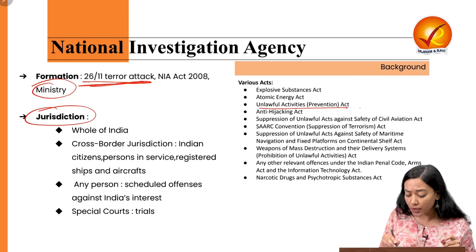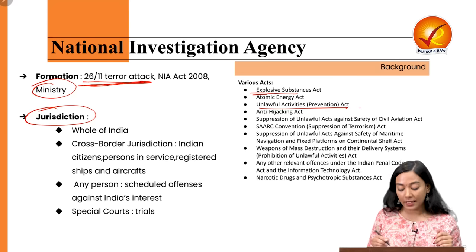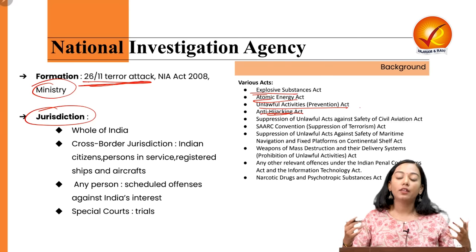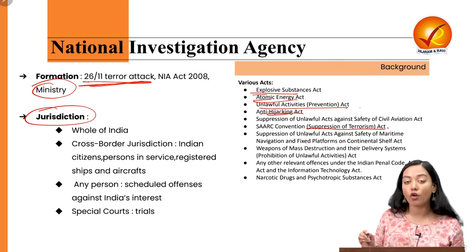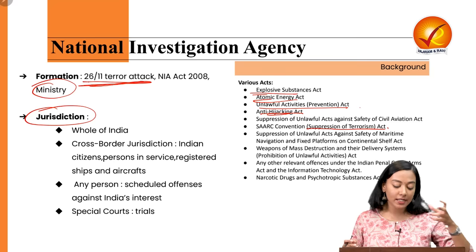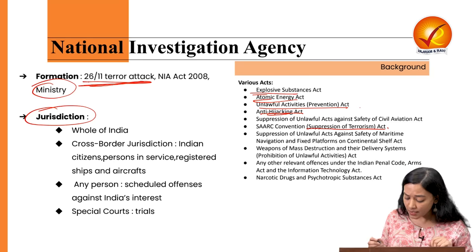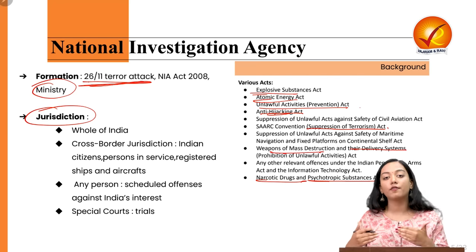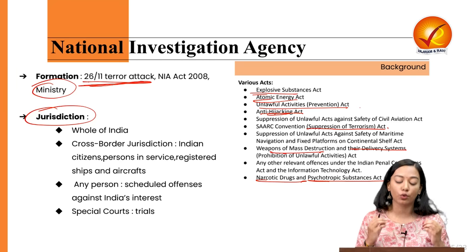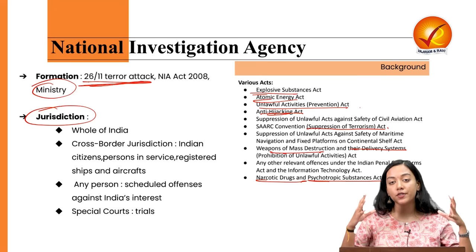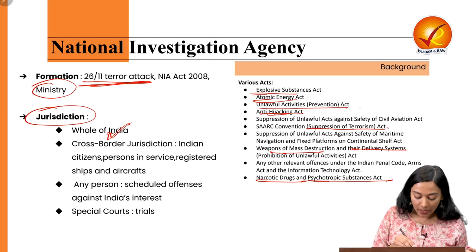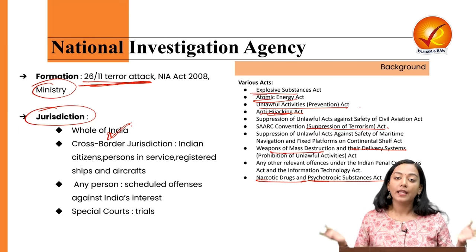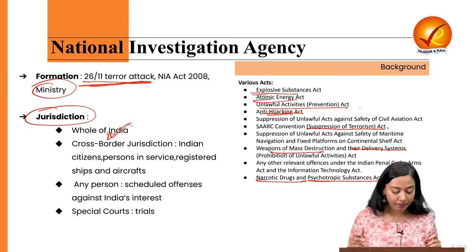Scheduled offenses include terrorism-related laws such as the Unlawful Activities Prevention Act (UAPA), misuse of explosive substances, misuse of atomic energy infrastructure, hijacking under the Anti-Hijacking Act, and the SAARC Convention for the Suppression of Terrorism Act. Also included are the Narcotic Drugs and Psychotropic Substances Act and the Weapons of Mass Destruction and their Delivery Systems Act. The NIA's jurisdiction covers all of India and has been extended to certain cases outside India.